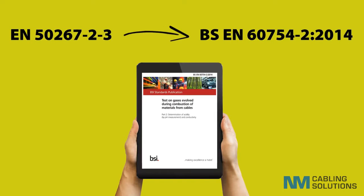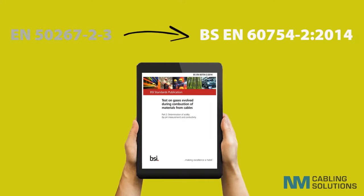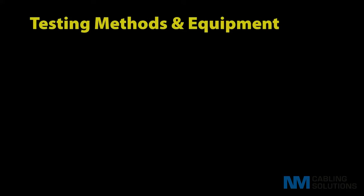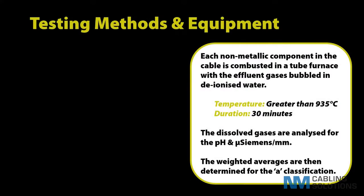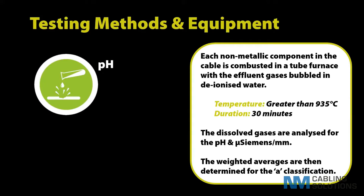The test procedure and equipment is defined in BS EN 60754-2 2014, which replaced the previous EN 50267-2-3. This slide describes the test methods and equipment used to look at two important elements, which are acidity or corrosiveness.